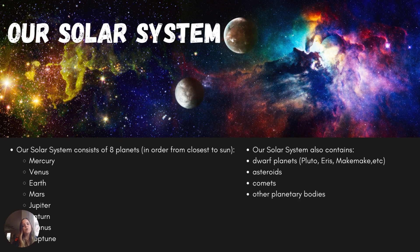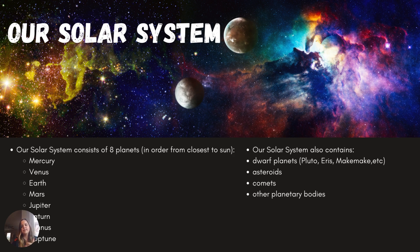From closest to furthest from the sun, we have Mercury, Venus, Earth, and Mars. Those four are inner planets and they are rocky — they consist of rocks or some variation of rocks, and they are more dense, which is why they're closer to the sun. After Mars, you have the asteroid belt, and then Jupiter, Saturn, Uranus, and Neptune. Those four planets are gaseous, formed much further from the sun because they are much less dense.